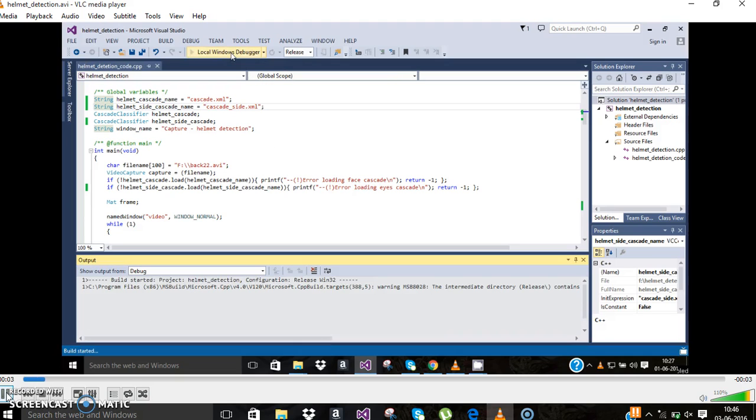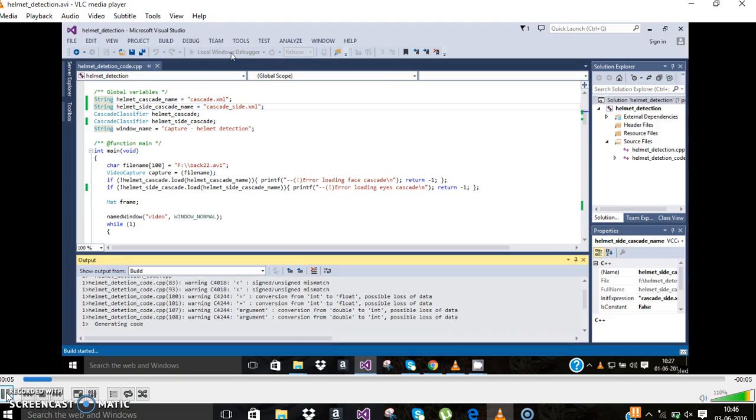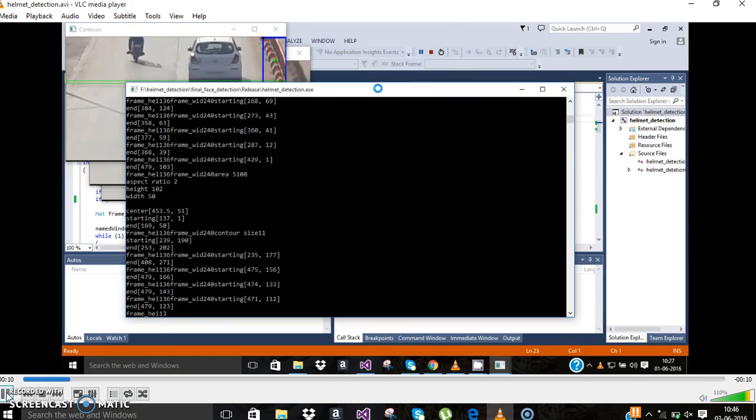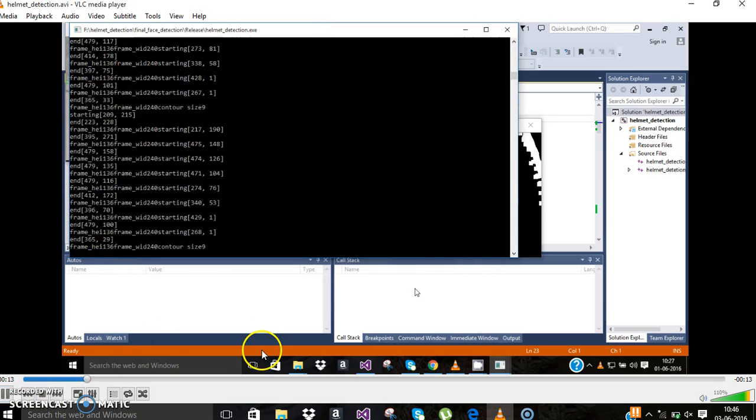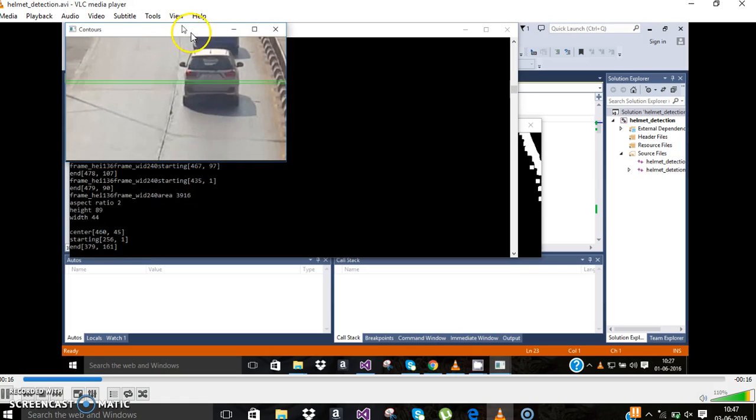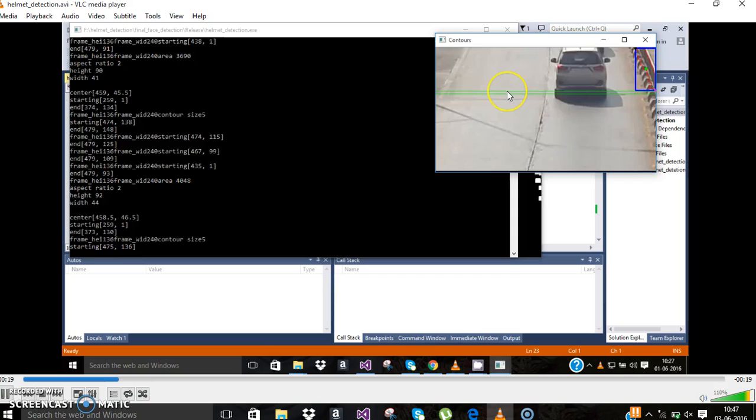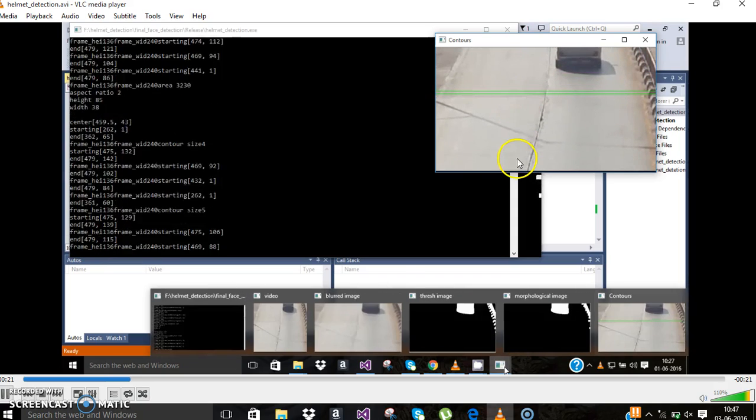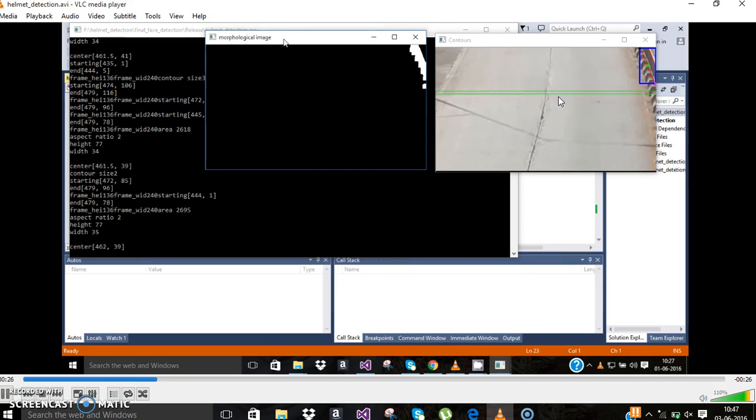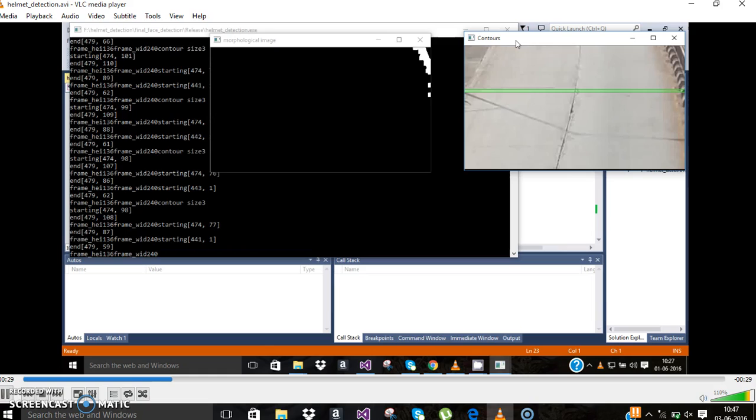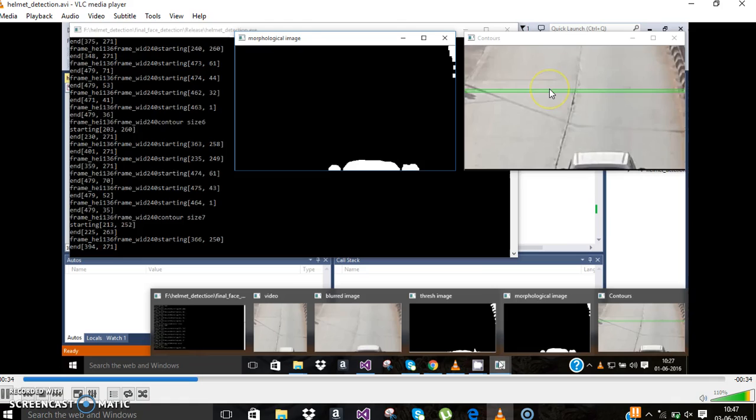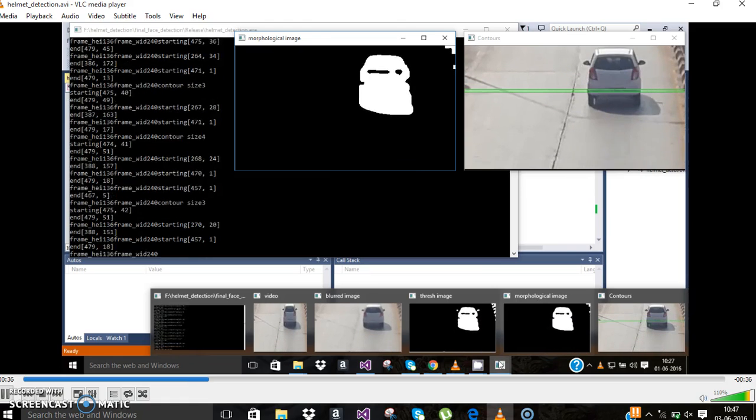Here you can see our output as we run the program. Here is the center line placed on the video. As the car or any vehicle comes in between the center part, it will capture that particular frame.